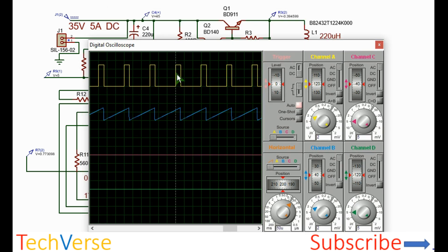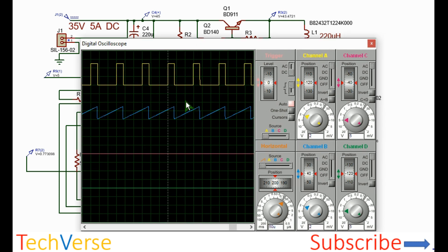These are the voltage waveforms. This is the PWM output and this is the sawtooth at the capacitor, the timing capacitor. The capacitor charges and discharges as shown.